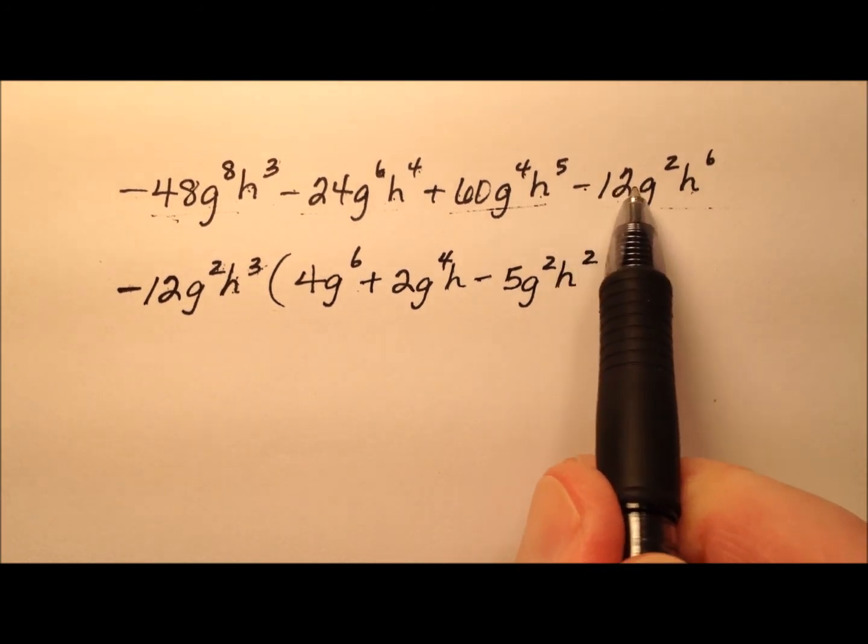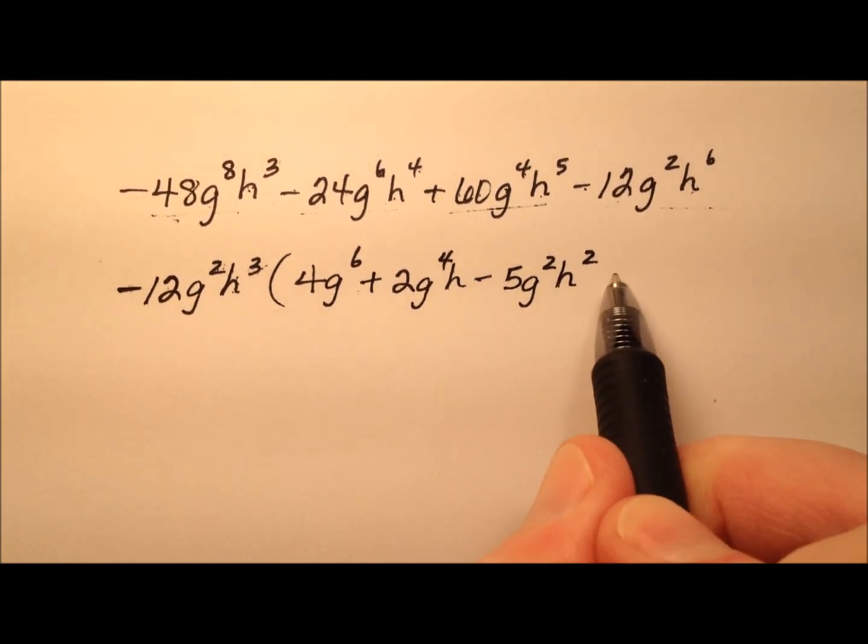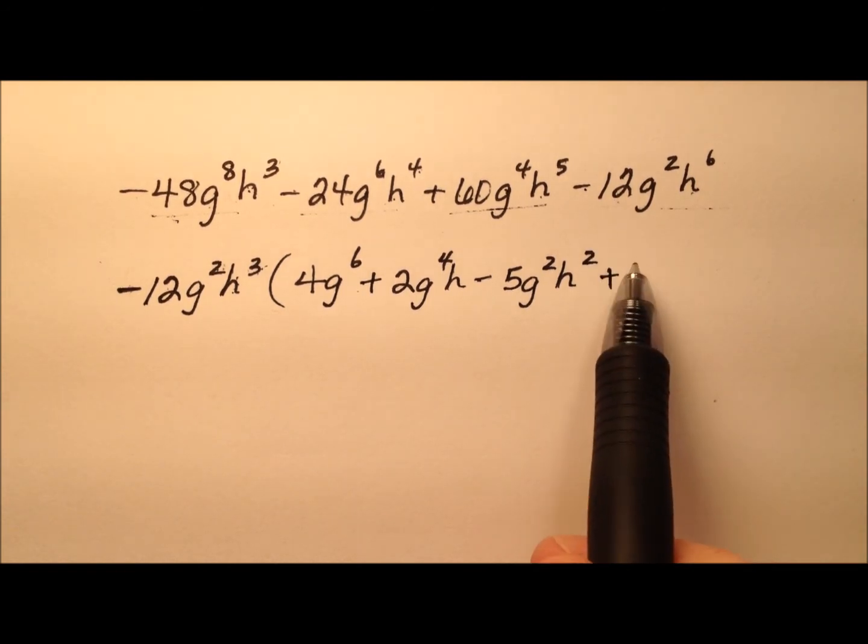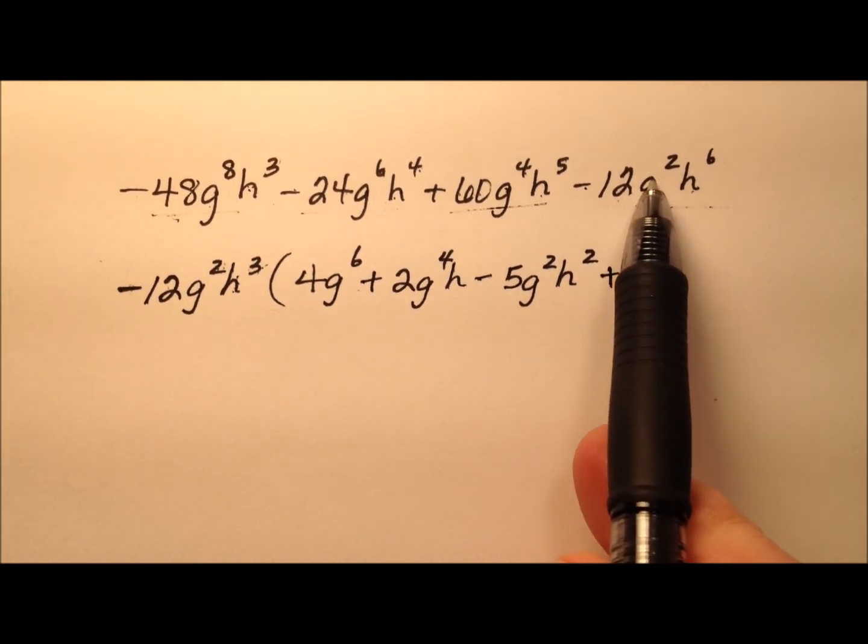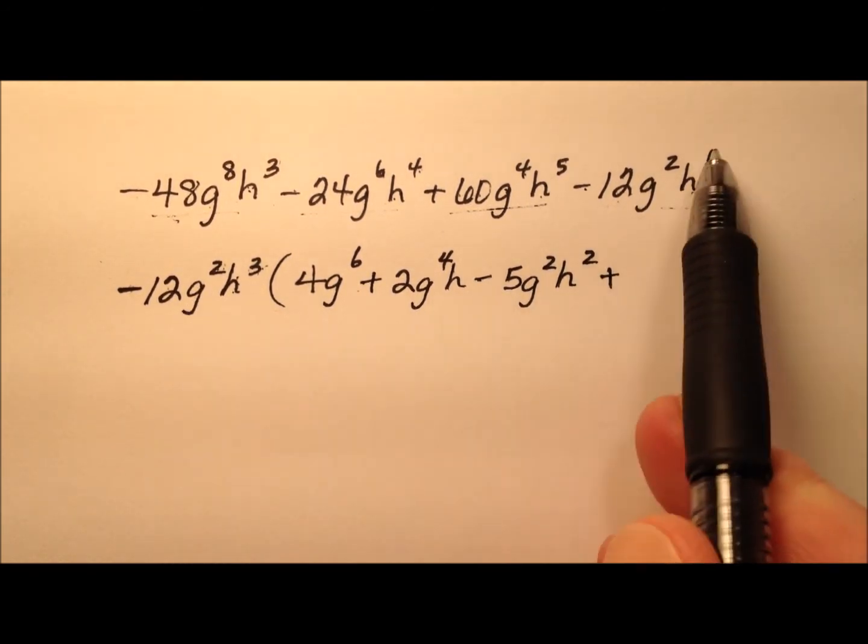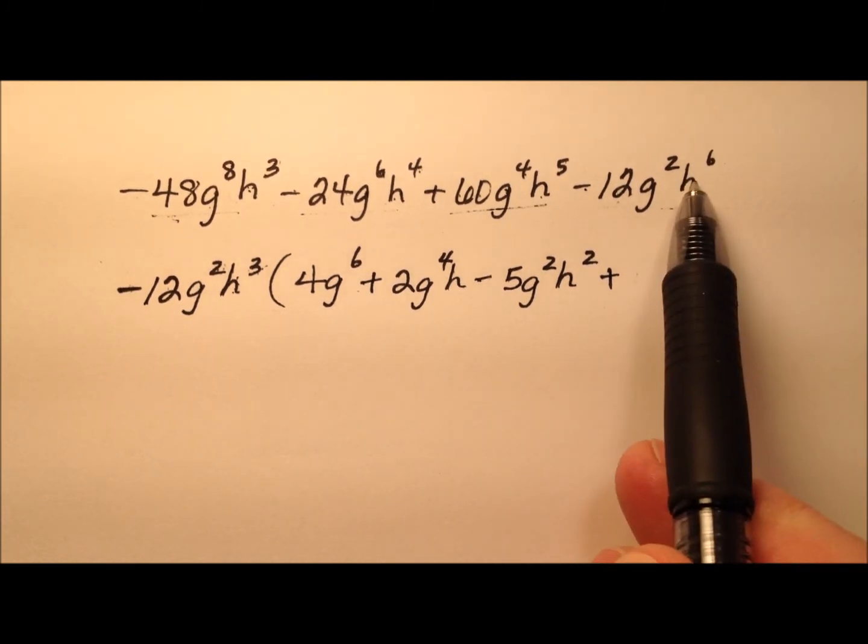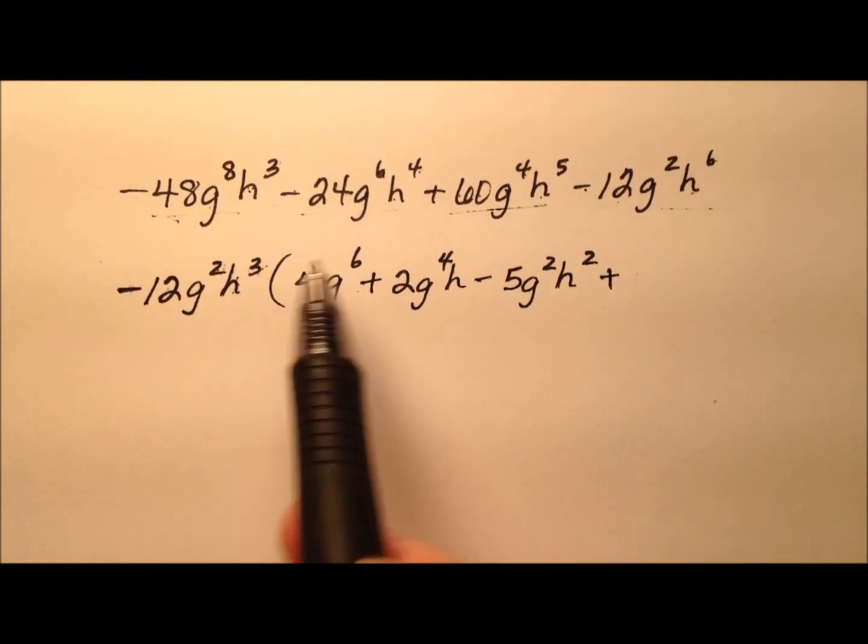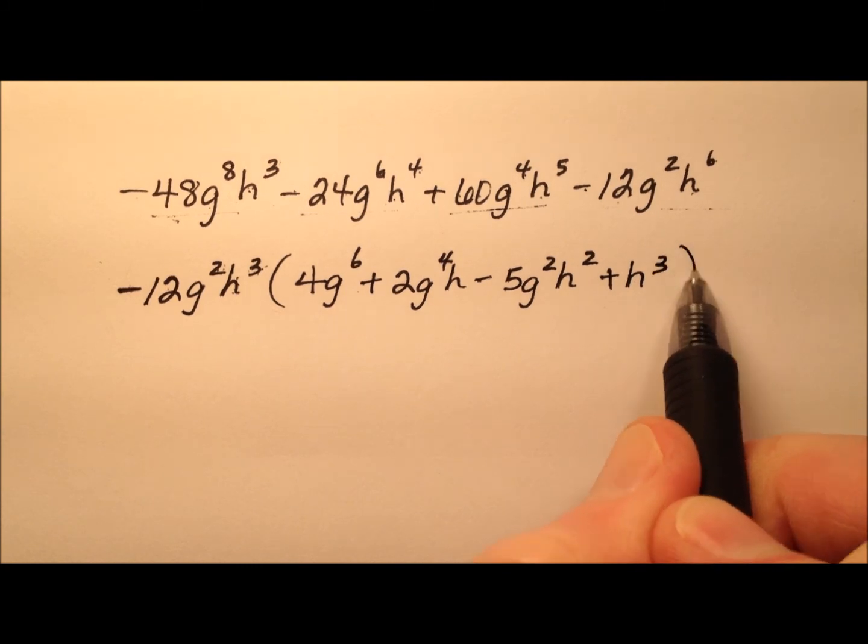Finally, negative 12 divided by negative 12 will be plus 1, but we won't write the 1. G squared divided by g squared, well that's 1, don't have to write that either. So h to the sixth divided by h cubed should just be h cubed.